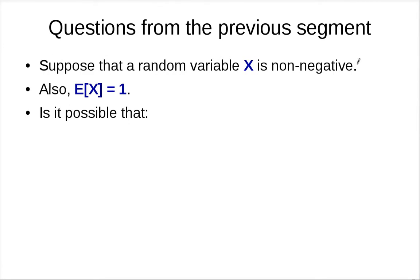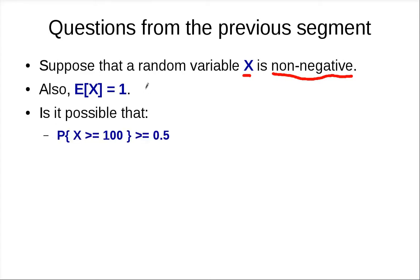Hi, let's continue our discussion on the Markov inequality. The question from the previous segment asked: if you have a random variable X which is non-negative, and the expected value of X is 1, is it possible that the probability of X being larger than 100 is larger than 0.5? We'll focus on just this case.